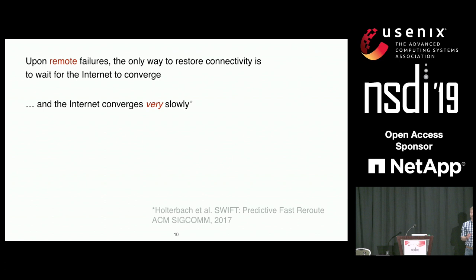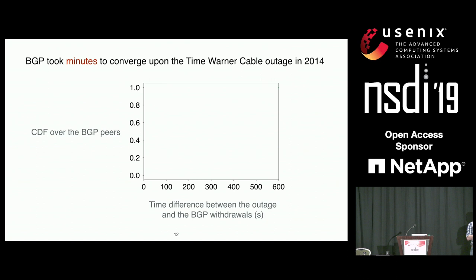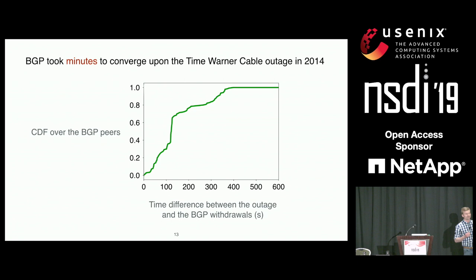Today I'm going to show it one more time with an example — an outage which happened in the Time Warner Cable network in 2014. We took all the BGP peers from RIPE RIS and RouteViews, and computed for each of them the time difference between the actual outage and when each BGP peer receives the first withdrawal. This gives us a CDF, and you can see it takes more than 100 seconds for half of the BGP peers just to receive the first withdrawal.